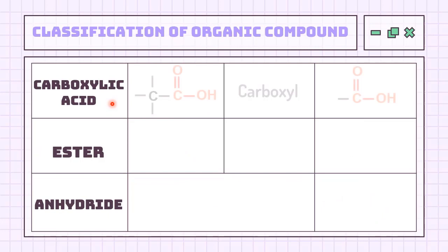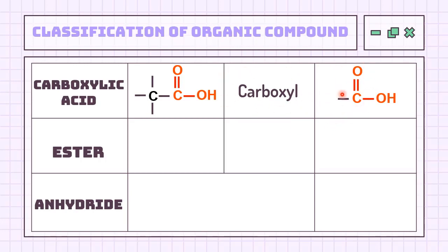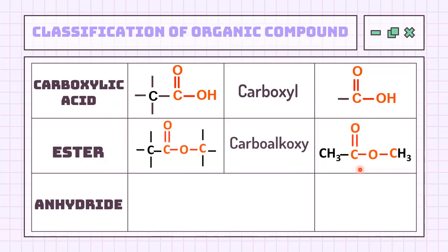Carboxylic acid has the functional group of COOH, known as the carboxyl group. This carboxyl name comes from the combination of both the carbonyl and hydroxyl groups. Ester's functional group is a bit similar to carboxylic acid, but it combines the carbonyl and alkoxy group instead. Hence, the name of its functional group is carboalkoxy.